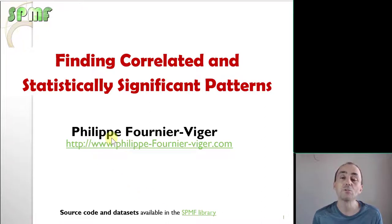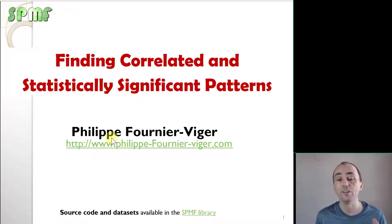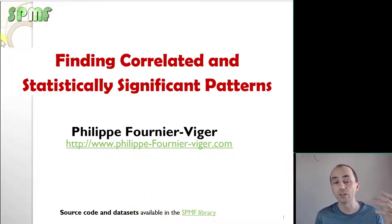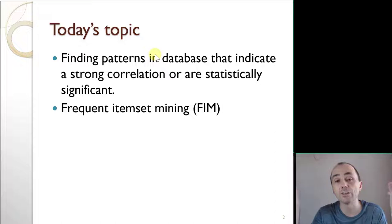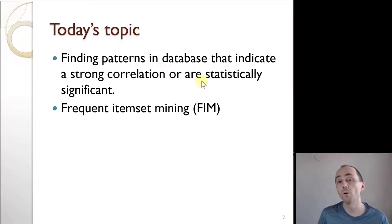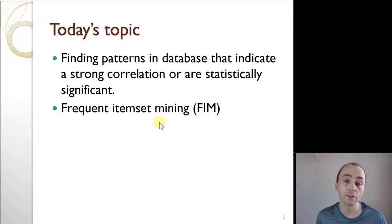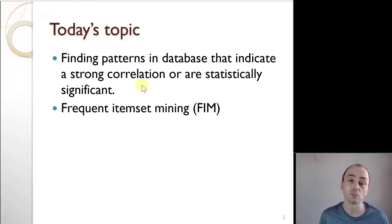Hi, my name is Philip. Today I will explain how to find correlated or statistically significant patterns in data. We'll talk about data mining. If you want to try the algorithms and ideas I will talk about today, you can check out the SPMF software — it is open source and has algorithms and data sets to try. The topic for today is how we can search in data to find patterns that indicate a strong correlation or that are significant and don't just happen by chance. I will talk about frequent item set mining and then we'll see how we can change it to find patterns that have a strong correlation or are significant.